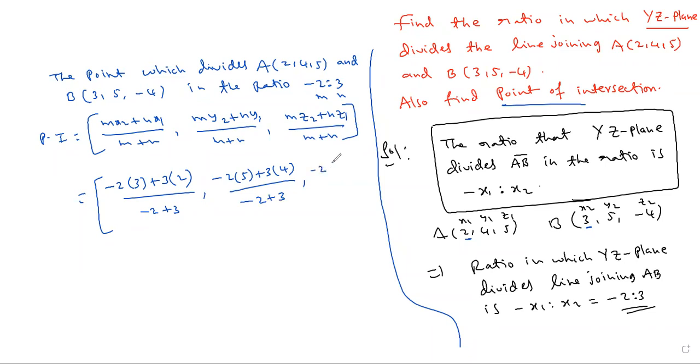Comma, Mz2, minus 2 into Z2 is minus 4, plus N is 3. Y1, what is Y1? Minus 4. By M plus N, minus 2 plus 3.